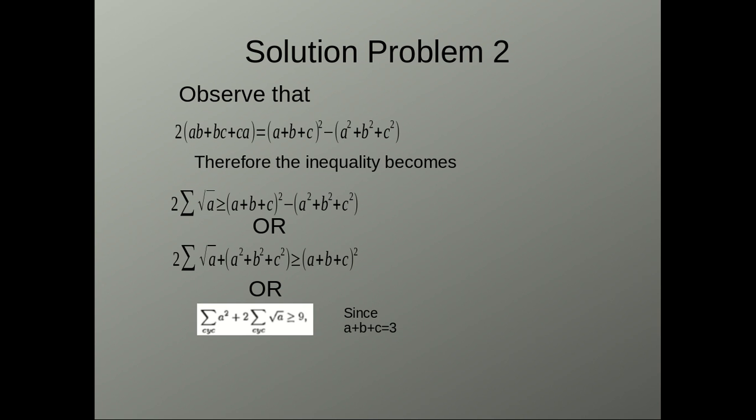we replace AB plus BC plus CA with this to get 2 root A plus root B plus root C plus A square plus B square plus C square is greater than or equal to A plus B plus C whole square. Now, we have to prove that root A plus root B plus root C into 2 plus A square plus B square plus C square is greater than or equal to 9.